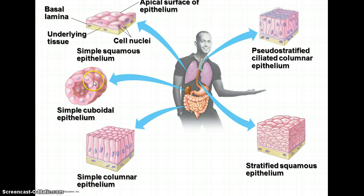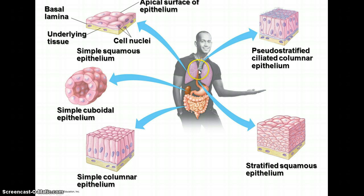We have cuboidal epithelium, which makes up glands and organs and is cube-shaped, and columnar epithelium that is column-shaped. You can find epithelial tissue in different organ systems: the integumentary system, which is the skin; the lungs in the respiratory system; the esophagus and intestine in the digestive system; and the kidney in the excretory system. So epithelial tissue is found in lots of different places in the body.